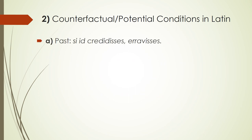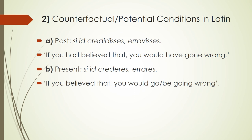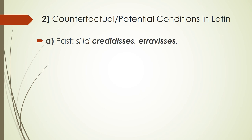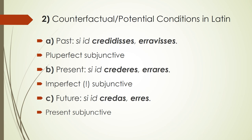For a past counterfactual: 'si id credidisses, erravisses' — if you had believed that, you'd have gone wrong. Two pluperfect subjunctives. For a present counterfactual: 'si id crederes, errares' — if you believed that, you would go wrong. Two imperfect subjunctives. For the future potential, we have two present subjunctives. So: pluperfect subjunctive for past, imperfect subjunctive for present, present subjunctive for future.